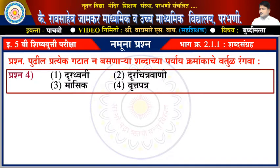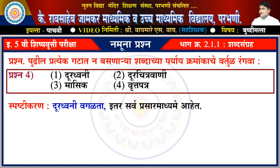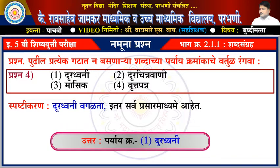પ્રશ્ન ચઉથા: 1 દૂરધ્વની, 2 દૂર ચિત્રવાણી, 3 માસીક, 4 ગુત્પત્ર. સ્પષ્ટિકરણ: દૂરધ્વની વગળતા ઈતર સર્વ પ્રસાર માધ્યમ આહેત. ઉત્તર: પર્યાય ક્રમાંક એક - દૂરધ્વની.